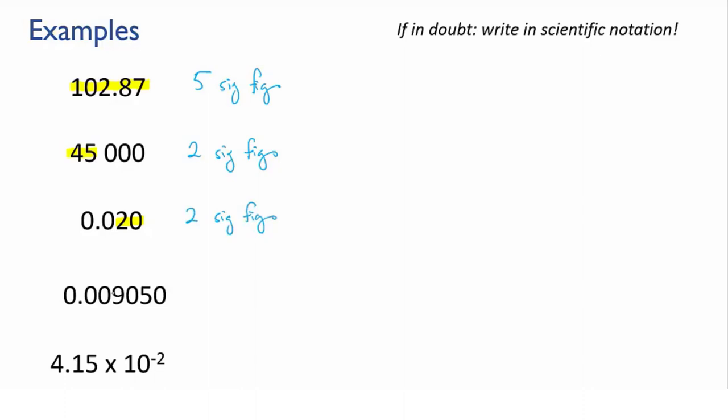0.009050. This is much like the last one. Start counting the sig figs at the 9, which is the first non-zero digit, and that gives us four sig figs in total.